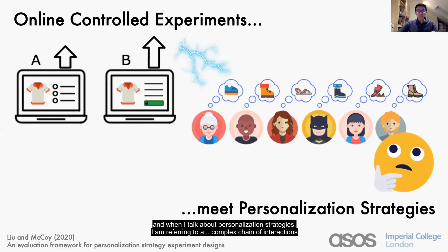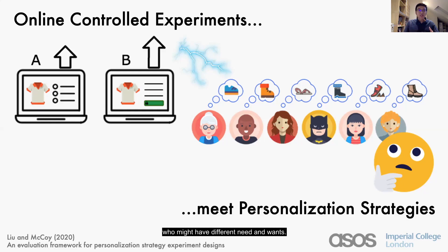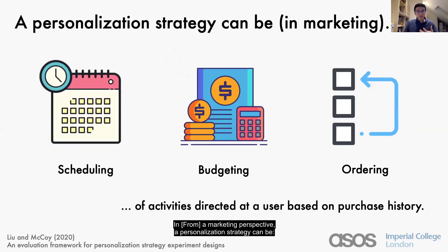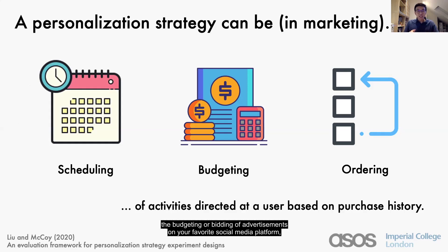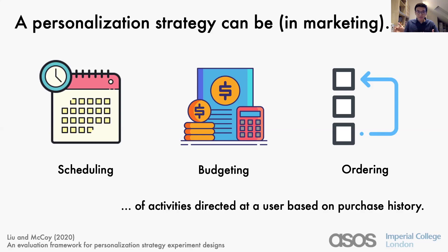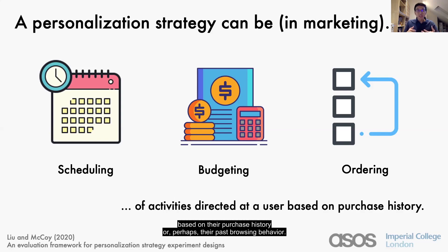When I talk about personalization strategies, I'm referring to a complex chain of interactions between you, representing an organization, and each individual who may have different needs and wants. In a marketing perspective, a personalization strategy can be the scheduling of when the next push message goes to users' phones, the budgeting or bidding of advertisements on social media platforms, or perhaps the ordering of different emails containing different promos to be sent out. These activities are usually directed at a particular user or a small group of users based on their purchase history or past browsing behavior.